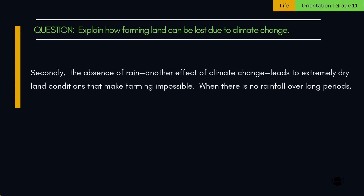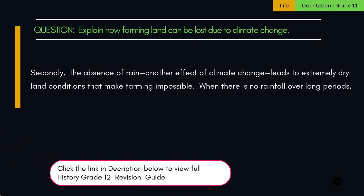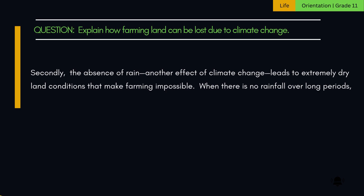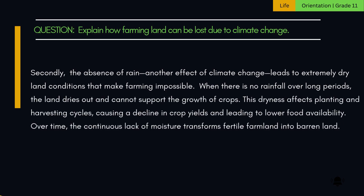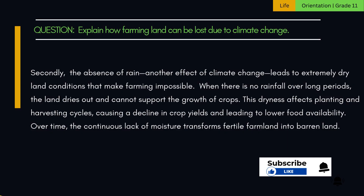Secondly, the absence of rain, another effect of climate change, leads to extremely dry land conditions that make farming impossible. When there is no rainfall over long periods, the land dries out and cannot support the growth of crops. This dryness affects planting and harvesting cycles, causing a decline in crop yields and leading to lower food availability. Over time, the continuous lack of moisture transforms fertile farmland into barren land.